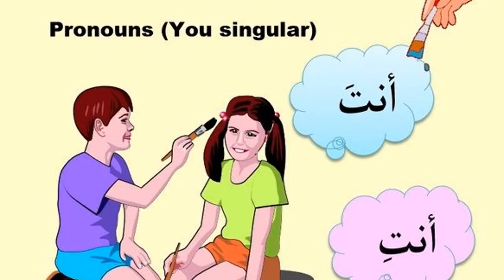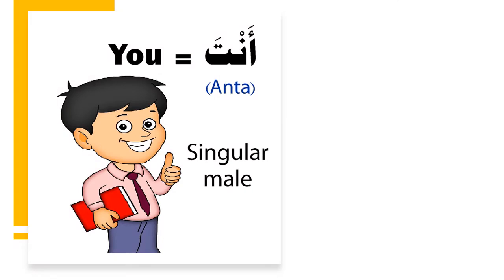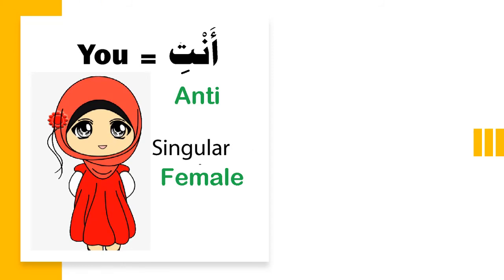Next pronouns: Anta and Antti. Anta means you and is used for male. For example, Anta Akhi, which means you are my brother. Antti means you and is used for female. For example, Antti Ummi, which means you are my mother.